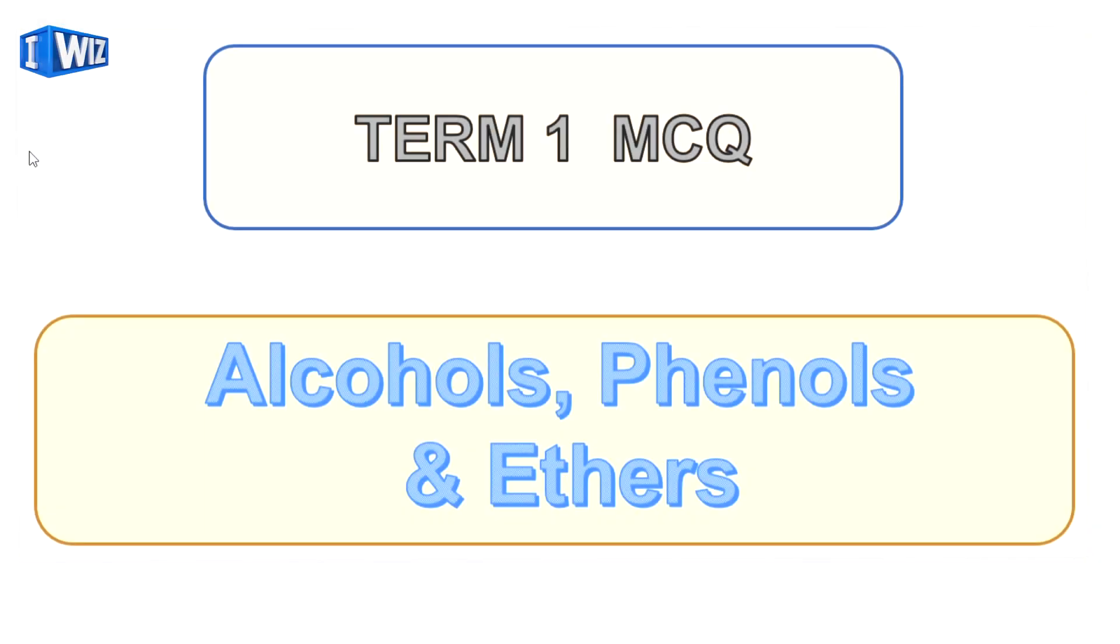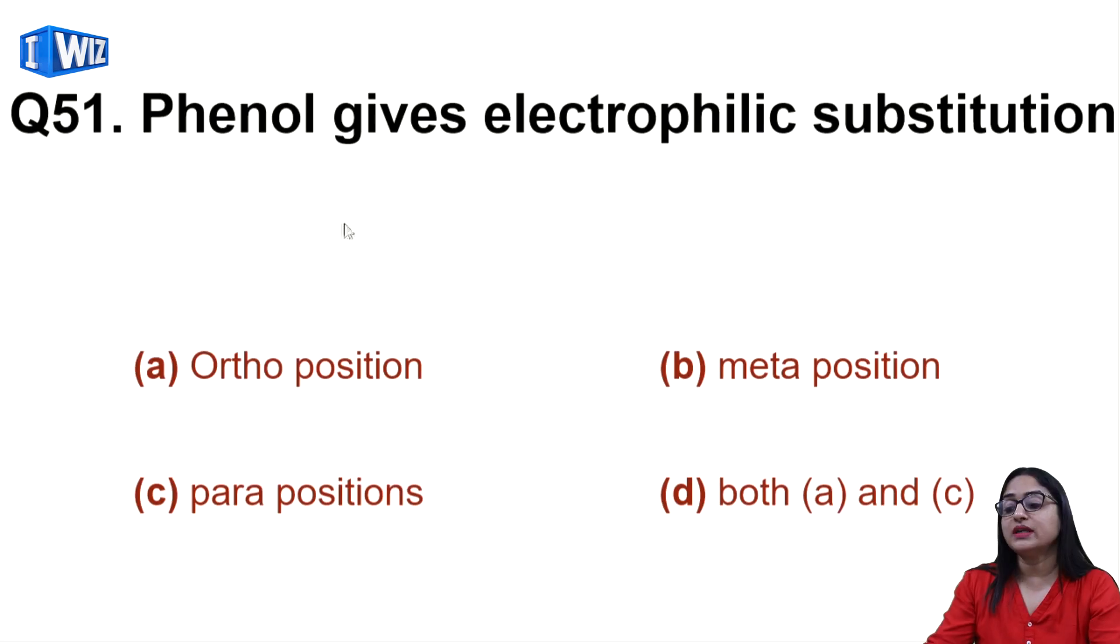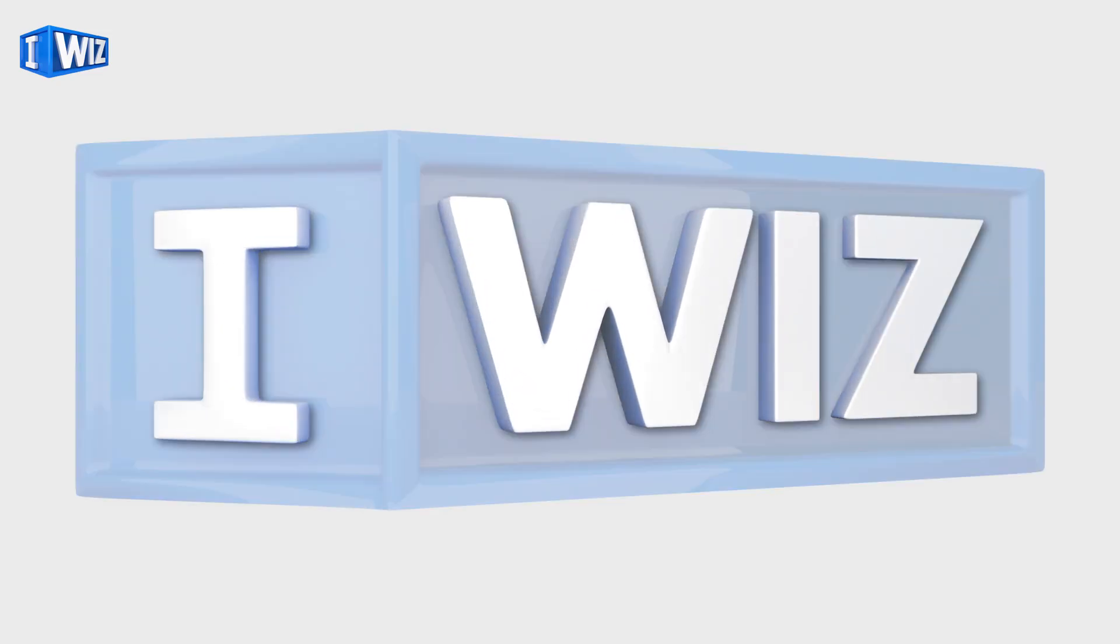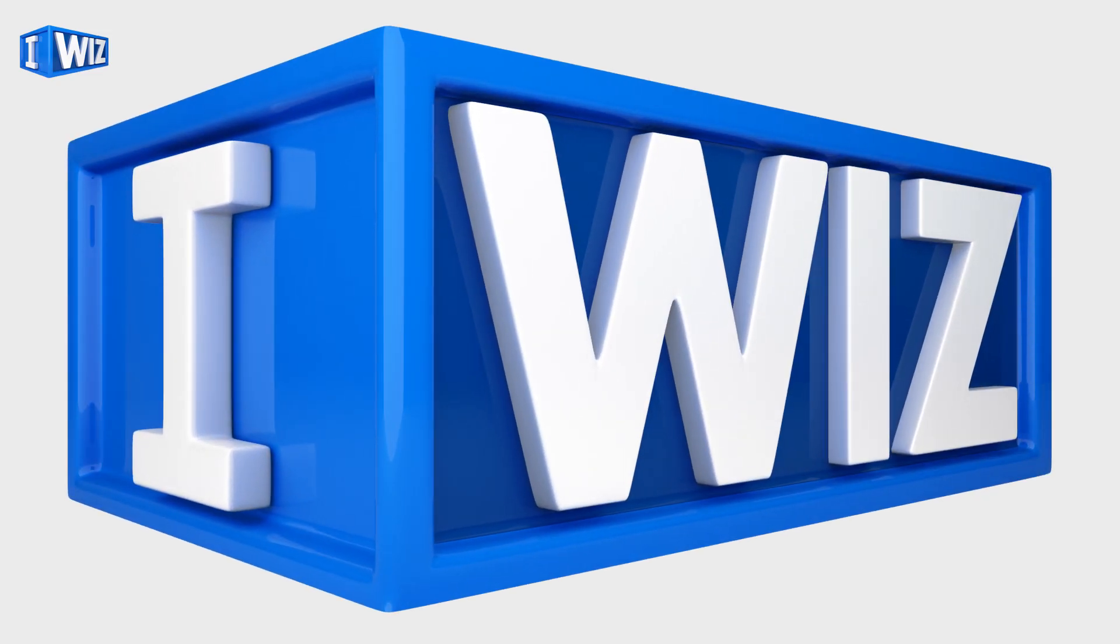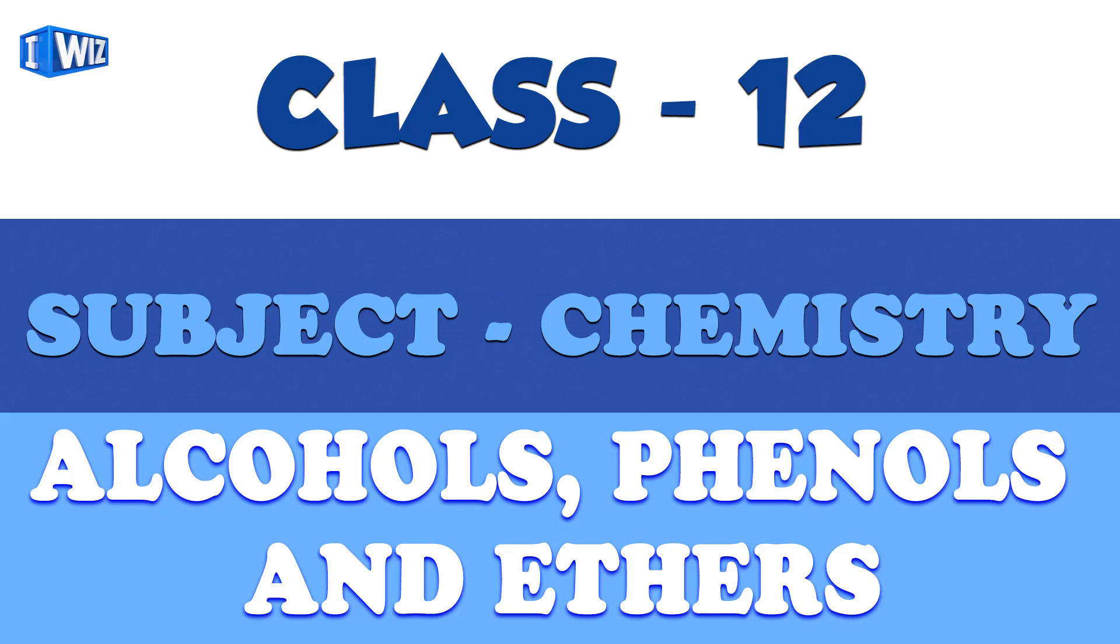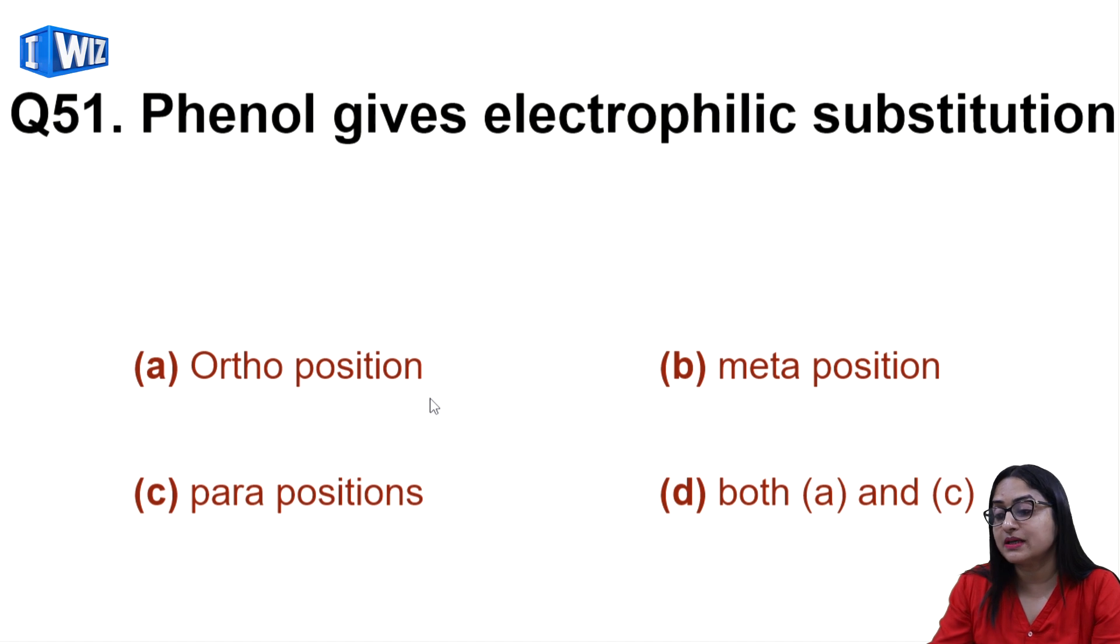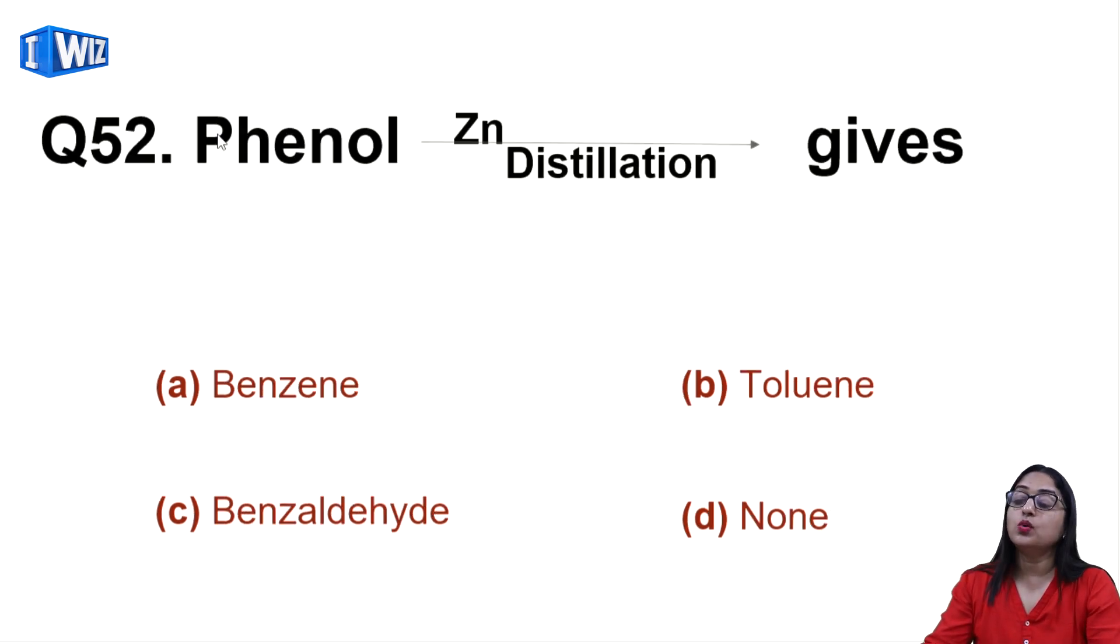Hello students, let's continue from where we left last time. In this part, the first question is: phenol gives electrophilic substitution because of ortho position, meta position, para positions, or both A and C. D is the correct answer because of both A and C.